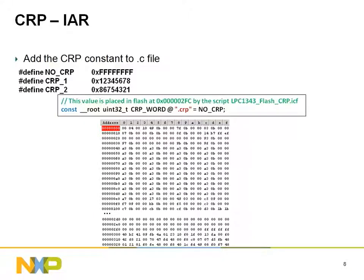You'll also need to define a constant in your application, which will be placed at the newly created .crp section. In the example illustrated here, I've chosen to disable CRP. This example code shows how the variable should be declared. I've also captured the contents of the resulting binary file. You can clearly see that the vector table is followed by the CRP value of all Fs.